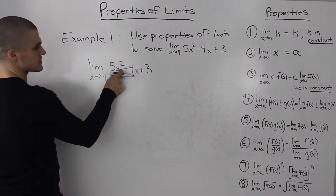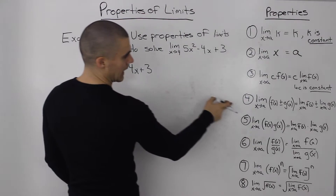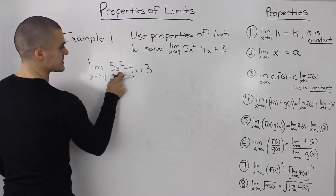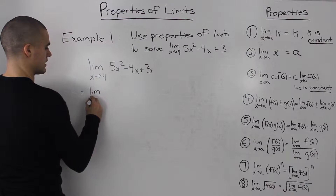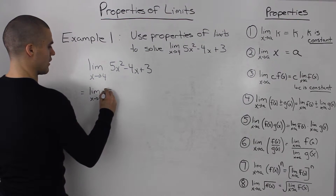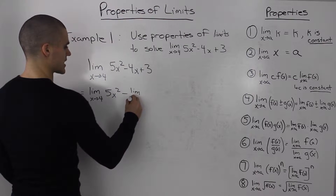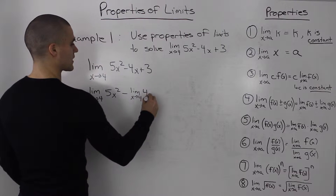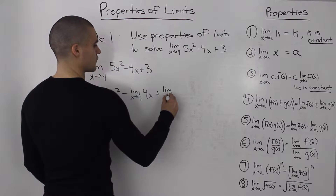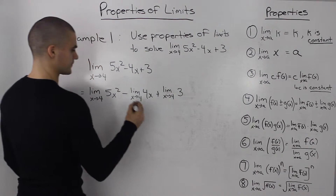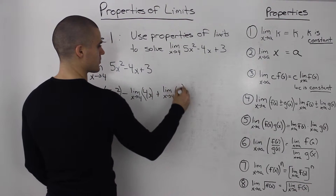Since we are adding and subtracting expressions, I'm going to use Property 4 and take the limit of each of these separately. So we rewrite this as the limit as x approaches 4 of 5x squared, minus the limit as x approaches 4 of 4x, plus the limit as x approaches 4 of 3. We split them up using Property 4.